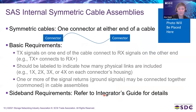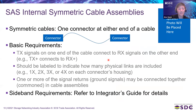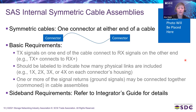Next, we have our internal symmetric cable assemblies. A symmetric cable is defined as a cable that has one connector at either end — no breakout or Y cables, just a single connector on each end. Basic requirements: TX connects to RX on the other end, so TX+ on one side connects to RX+ on the other side. The cable should be labeled to indicate how many physical links are included — that could be 1, 2, 3, or 4X on each connector's housing. One or more of the signal returns or ground signals may be connected together or commoned in the cable assemblies. For sideband requirements, please refer to the Integrator's Guide for details.